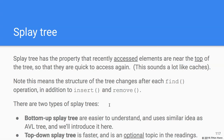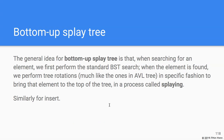There are two types of splay trees: bottom-up and top-down. Bottom-up is easier to understand because it uses ideas very similar to the AVL tree. Top-down splay trees are faster and more commonly used in practice, but harder to understand. Top-down is presented as an optional topic in the readings.